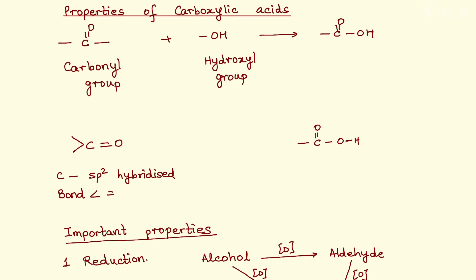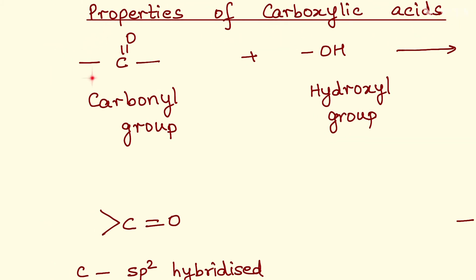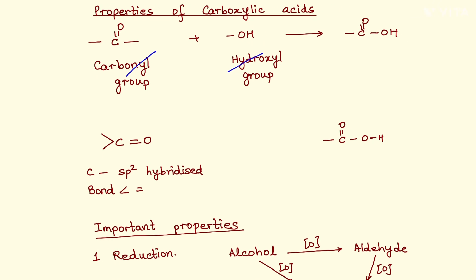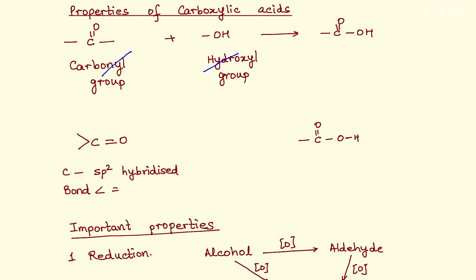The carboxyl group is actually made up of two parts. You remember doing carbonyl compounds — C double bond O as the functional group — the carbonyl group from the previous chapter on aldehydes and ketones. Hydroxyl is the OH group from alcohols. What we do is combine the two: carbonyl plus hydroxyl gives us what we call the carboxyl group, and that is why these are called carboxylic acids.